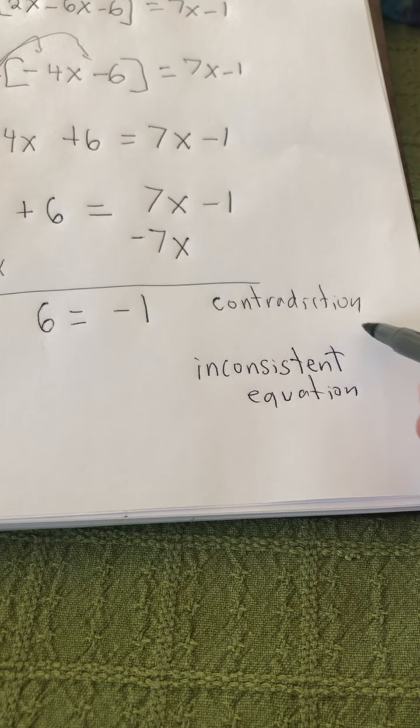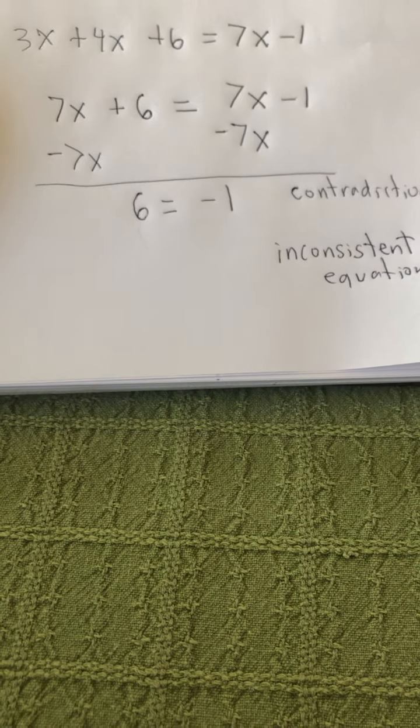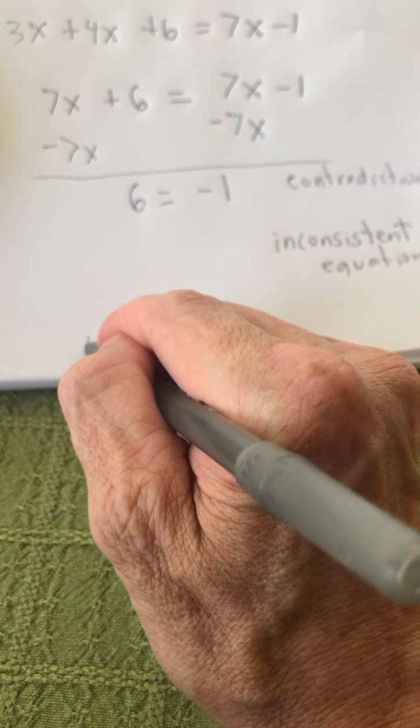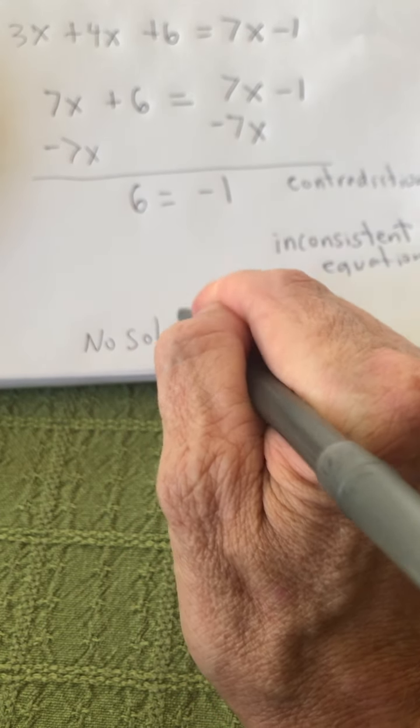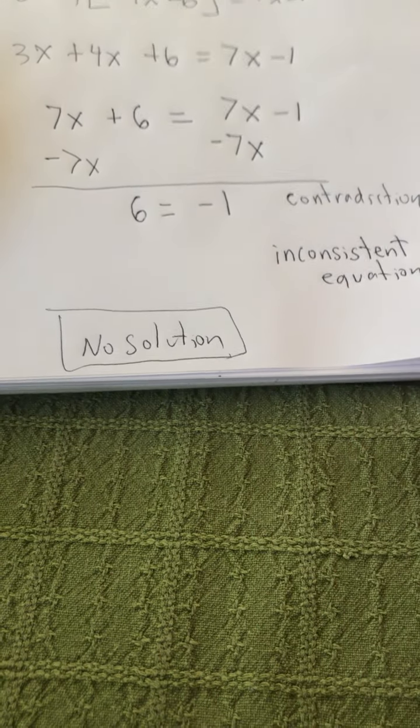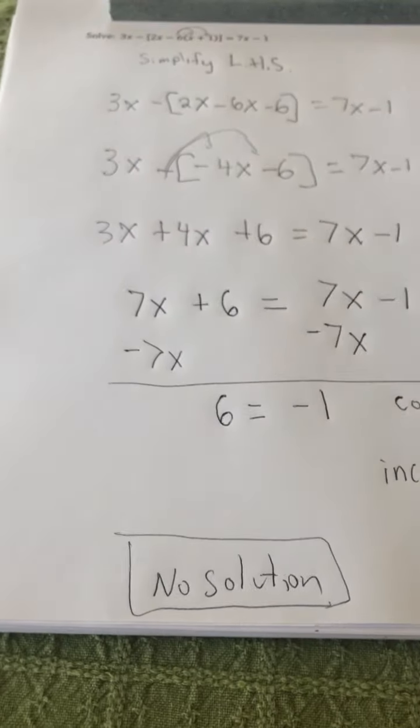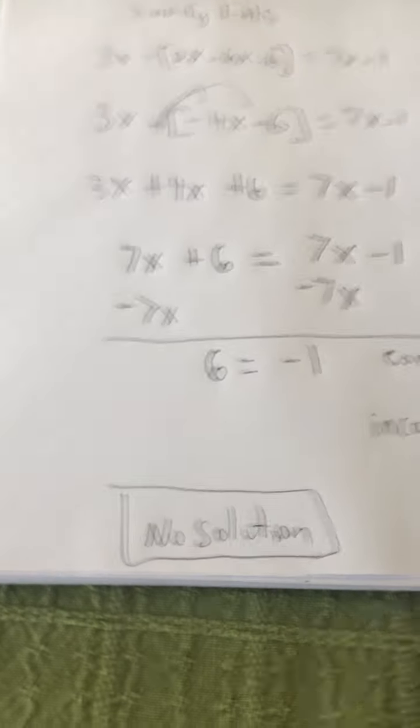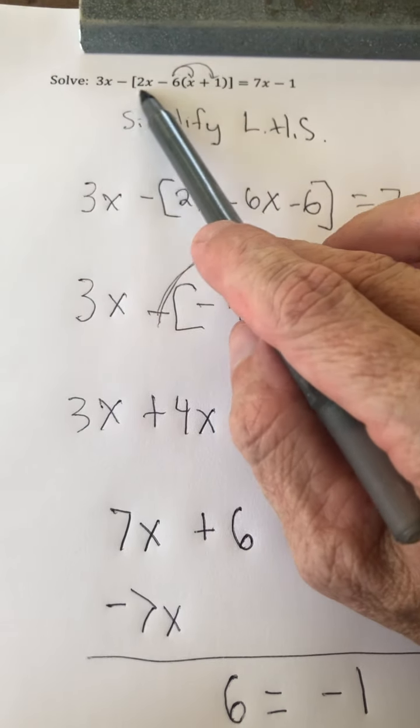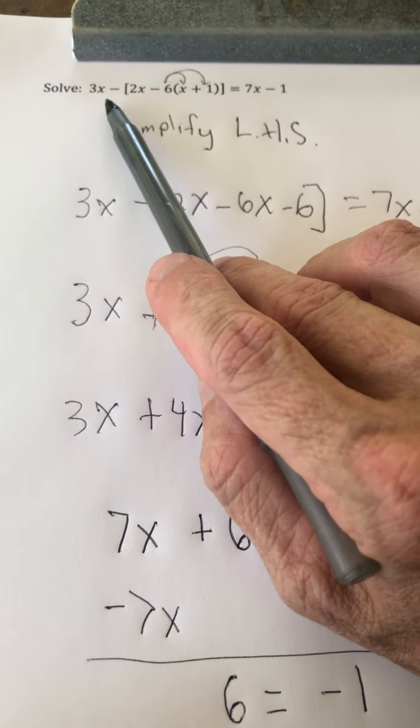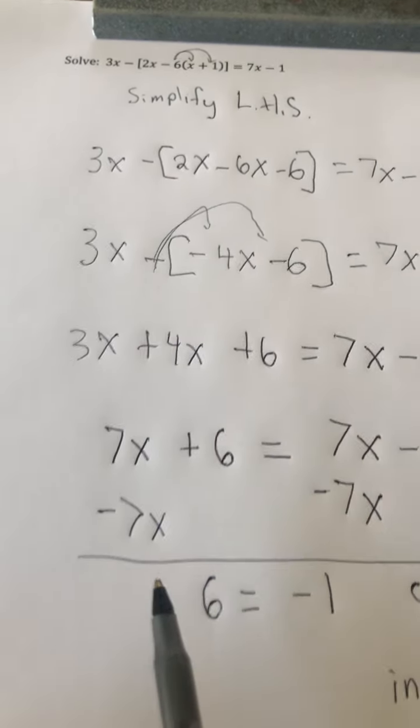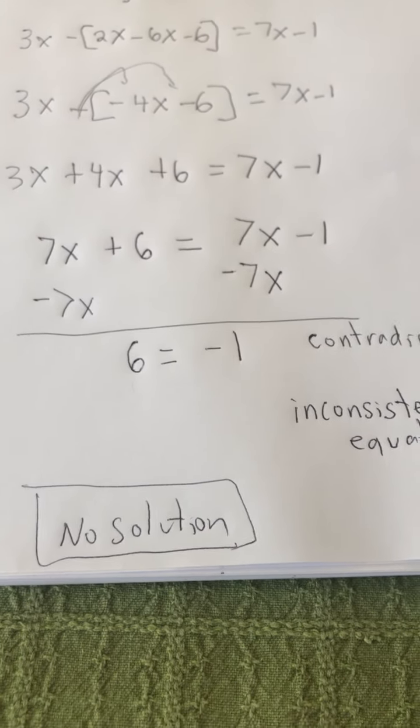So as a result, we say that there is no solution. The original equation, which we have here, there is no value of x that will make this true. So we say, no solution.